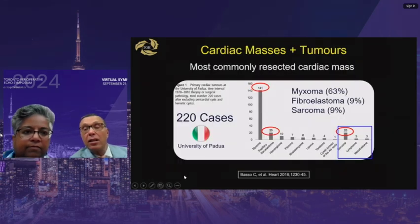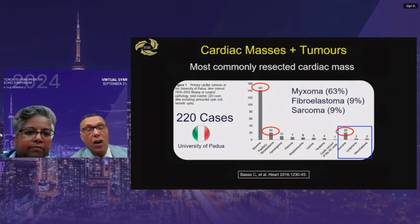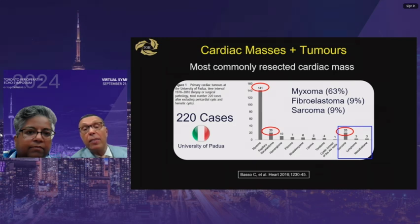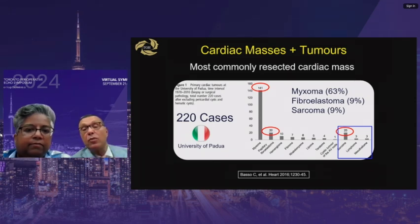Looking at pathology distribution: by far and away, myxoma is the most common primary cardiac tumor. Second are papillary fibroelastomas. Sarcomas are very uncommon but do exist — the most common malignant tumor is a sarcoma. But statistically, if you see a mass in the heart, it's going to be a myxoma.